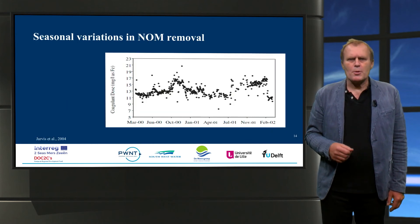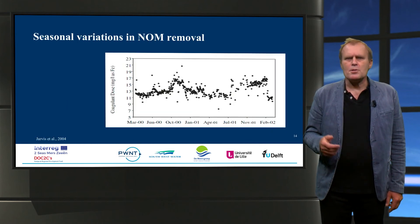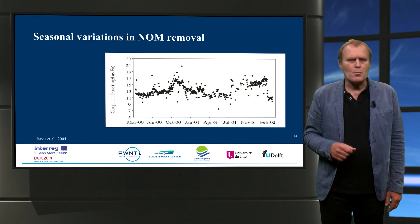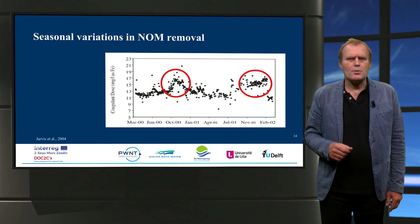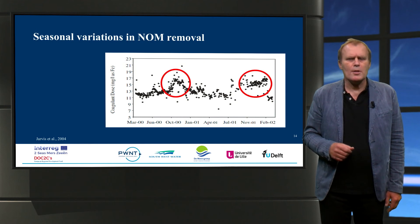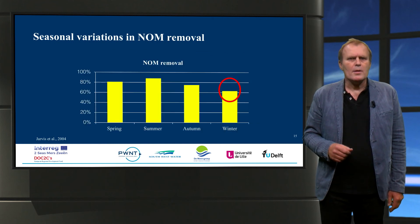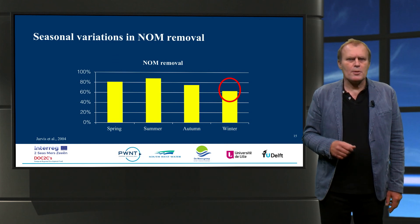The last topic of this presentation is the seasonal variation in NOM removal with coagulation. In this graph we observe that during the cold season more coagulant is dosed to get properly sized flocs to settle. Despite the higher coagulant dose, the removal of natural organic matter always decreases in the winter period.